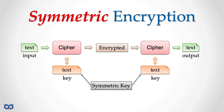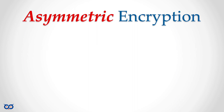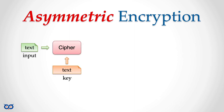So you can see the key used for encryption and the key used for decryption are identical — that is symmetric encryption. What we did before was symmetric encryption; we just didn't give it a name. With asymmetric encryption, if symmetric uses the same key, you can guess the difference is in the key.